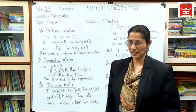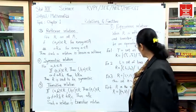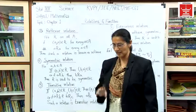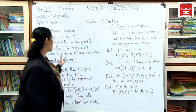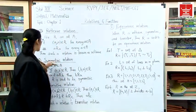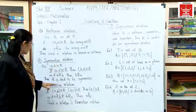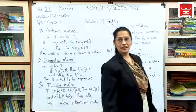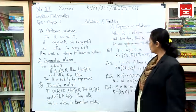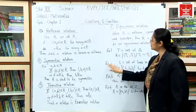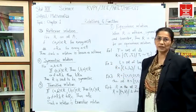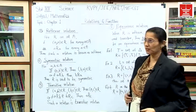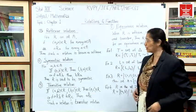Hello students. We have come back and now we will see — we have already seen the types of relations: reflexive relation, symmetric relation, transitive relation, and equivalence relation. Here I have written a few examples and we will see one by one which relation is of which kind.